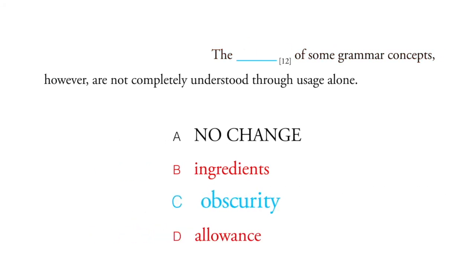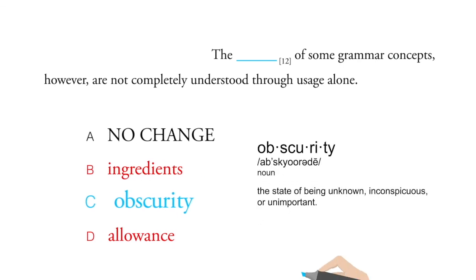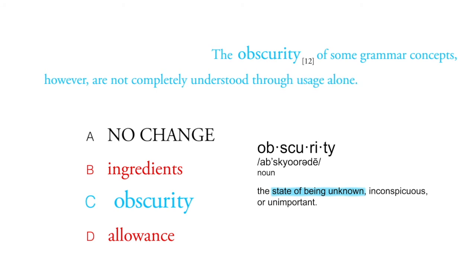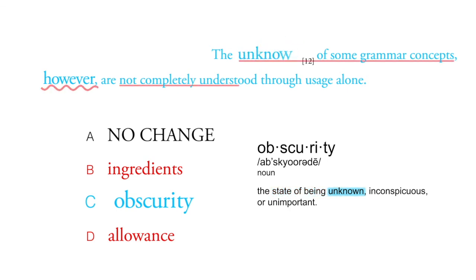Now obscurity is interesting, because maybe you read that word and you think, oh yeah, that's when I'm like unsure or vague about something. But let's try plugging it in. The obscurity of some grammar concepts, that actually sounds kind of neat, however, are not completely understood through usage alone. Now, the however is important. So now we're actually saying that it's like these parts are unknowable.